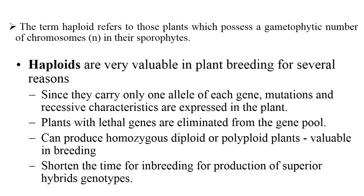Plants with lethal genes are eliminated from the gene pool. They can produce homozygous diploid or polyploid plants, which is valuable in plant breeding. Haploids can shorten the time for inbreeding for production of superior hybrid genotypes.